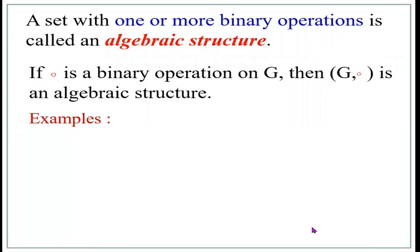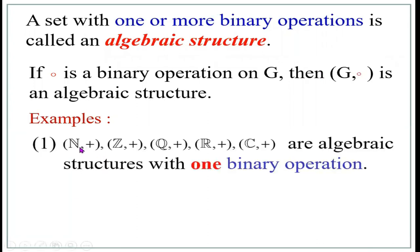Examples: N comma plus is the set of natural numbers with respect to addition. Z comma plus is the set of integers with respect to addition. Q comma plus is the set of rationals with respect to addition. Similarly, the set of real numbers and the set of complex numbers with respect to addition are algebraic structures with one binary operation, namely addition.